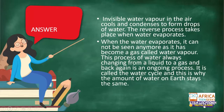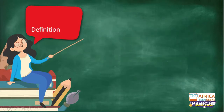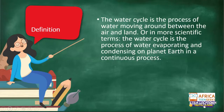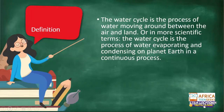One of the lesson objectives is to know the definition of the water cycle. The water cycle is the process of water moving around between air and land — water moves from land to air, and after it condenses it goes back to land. In scientific terms, the water cycle is the process of water evaporating and condensing on planet Earth in a continuous process.